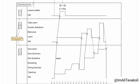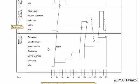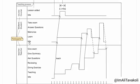Here are the different states of the student participant and the course participant. The order of these states is also important. In the teaching process, the teacher's states change from idle to teaching, then to giving exercise, reviewing, asking questions, giving summary, and giving exam. The student starts in idle, then moves to learn, memorize, answer questions, and finally take exam. The course participant starts in idle and then changes to the lesson added state.